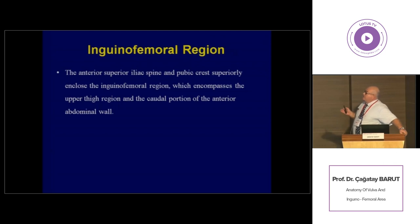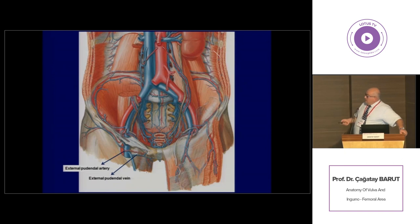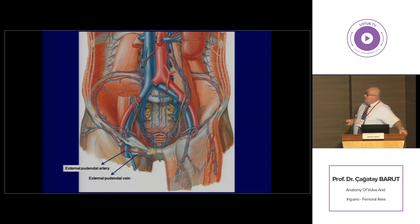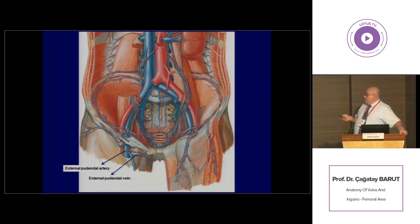For the inguinal femoral region, this region lies between the anterior superior iliac spine and the pubic crest or pubic symphysis. It contains the lower parts of the anterior lateral abdominal wall and the upper parts of the thigh region. The most prominent structure here is the inguinal ligament, formed by the aponeurosis of the external abdominal oblique muscle, and it is a quite important reference structure for this region. In addition, this region contains part of the inguinal canal, the femoral canal, and the femoral triangle.